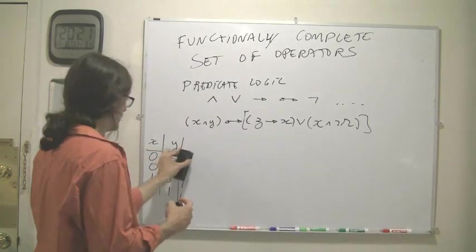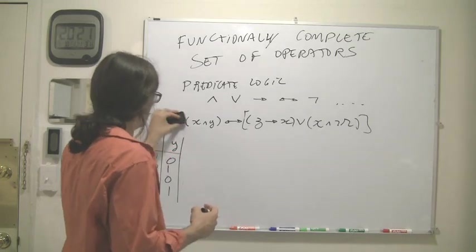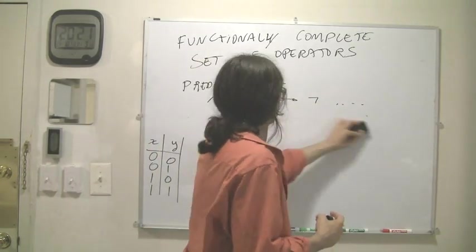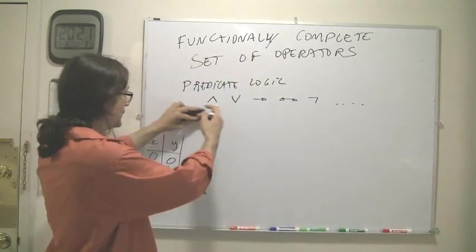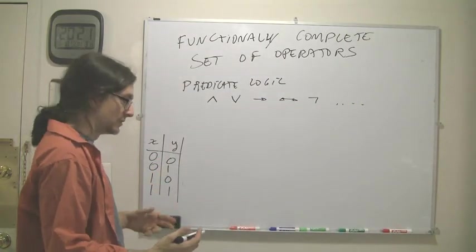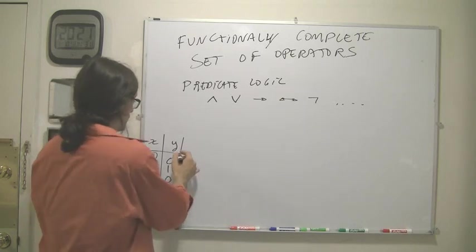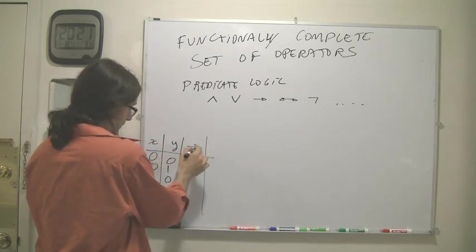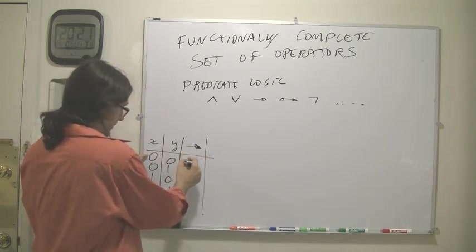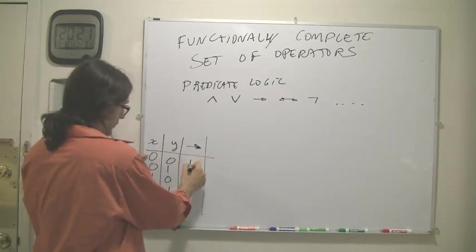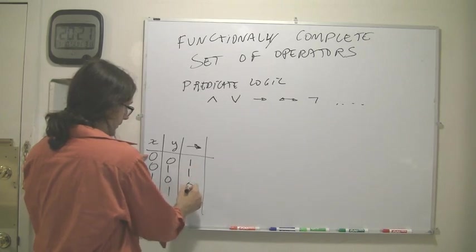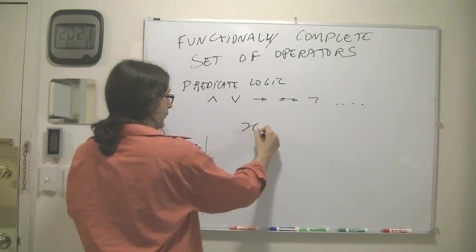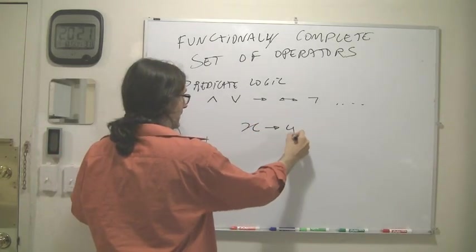So if instead of going from the expression to the truth table, we wanted to do it the opposite way. Suppose we wanted to write some of those. Let's do some simple functions in just two variables to get the idea. So suppose we have the operator implication. We know that this is true everywhere except on this row. So that's the truth table for the expression x implies y.